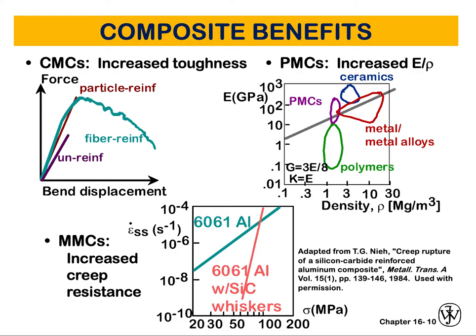If you're looking for increased creep resistance, you can use metal-metal-ceramic composites. Creep is the elongation of a material under constant loading. You can see exactly how composites differ from aluminum — for example, 6061 aluminum — and how the creep compares to aluminum with silicon carbide whisker composites.